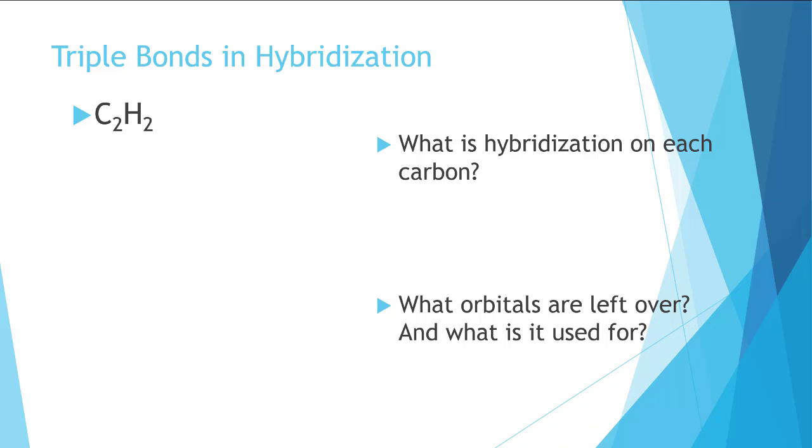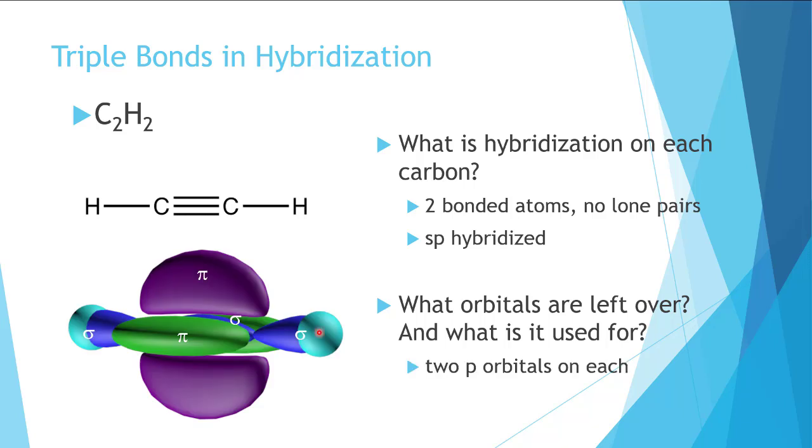For C2H2, the Lewis structure looks like this. The carbons here are the same, so we'll just discuss one and we'll know that the other is the same. The carbon is bonded to two atoms, a hydrogen and a carbon. This means that we'll need two hybrid orbitals, so it is sp hybridized. This leaves two orbitals left over with which to form the pi bonds. And we can see that here.